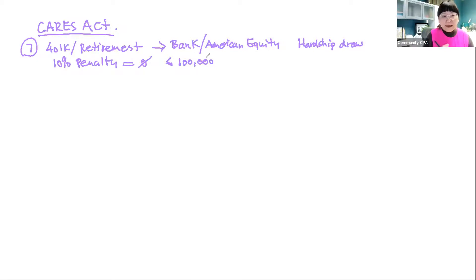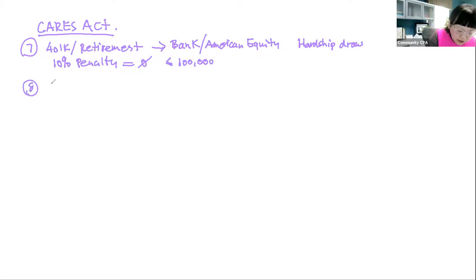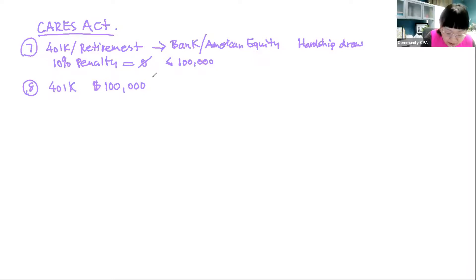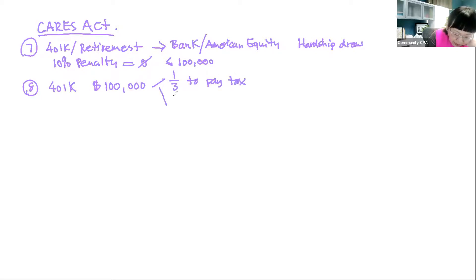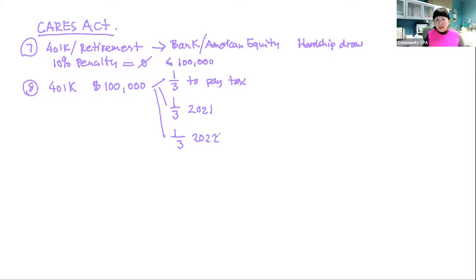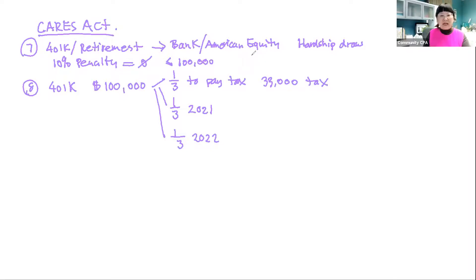Free money number eight, also 401(k): the money you drew — you don't pay the penalty, and you also don't have to pay all the income tax right away. The CARES Act says you can pay one-third of the taxes now, one-third in 2021, and one-third in 2022. If you drew $100,000, you're paying $33,000 in taxes spread over three years — and zero penalty. That's literally free money if you know where to look.